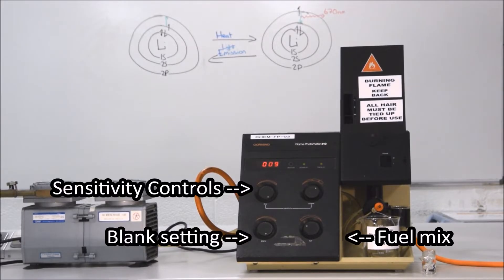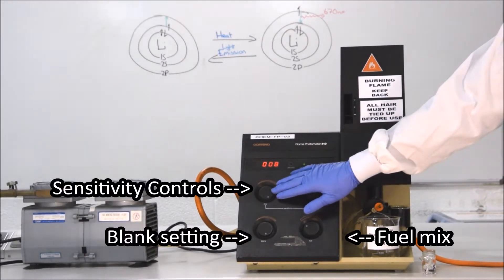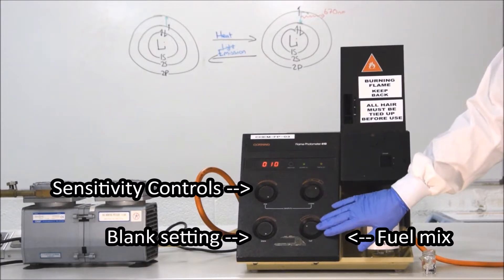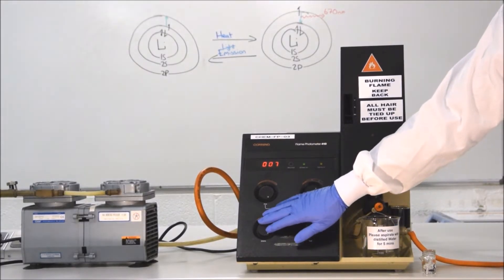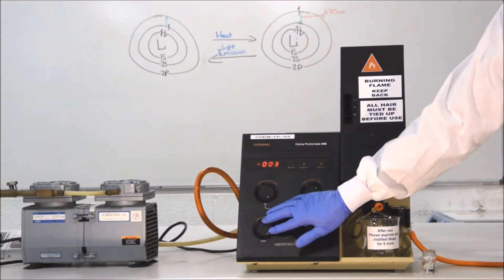This model also has four control wheels. The top two control the sensitivity, which we will come back to. The bottom left one allows us to zero it, and the bottom right controls the fuel mix. We probably won't need to adjust the fuel mix since the machine will already be set up for you.